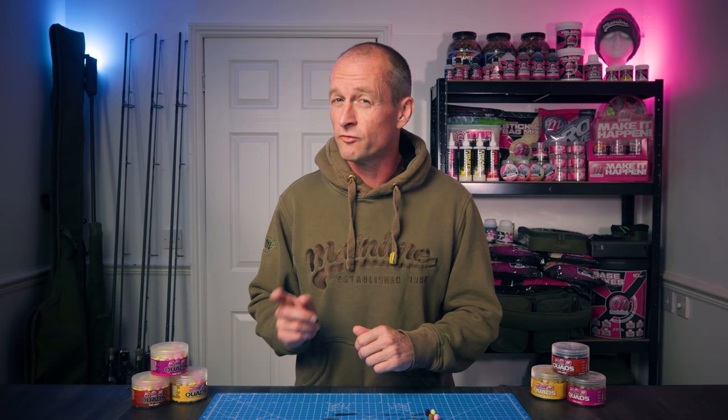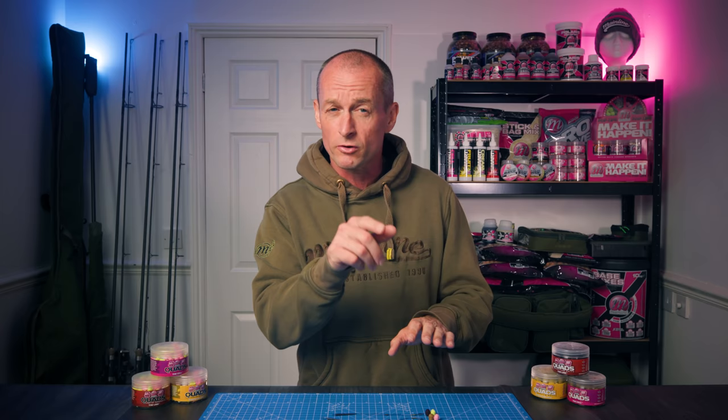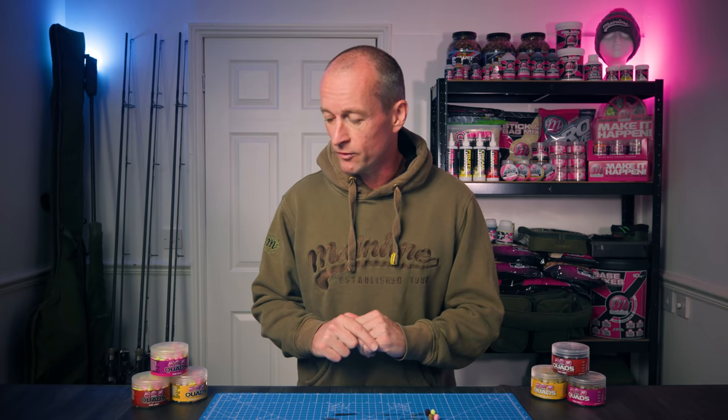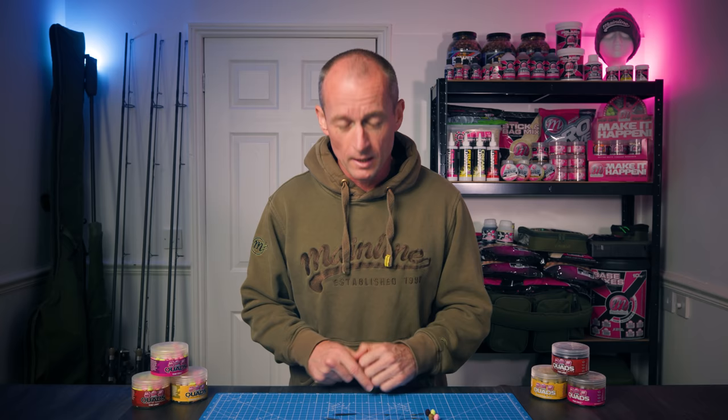They're also going to work well with other spod mixes like particles, chopped tiger nuts, things like that. Of course, with a super versatile hook bait like this, there's many ways to use them. The pop-up ones, to me, look like they're going to make a really good zig hook bait, but also a good floater fishing hook bait. There's times when having a bright one out there could be worth a go. White in particular is a good hook bait I've caught a lot of fish on off the top.